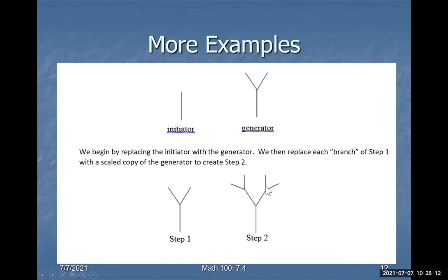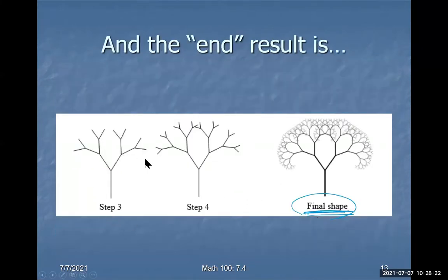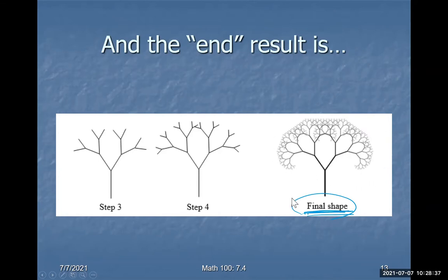We replace each branch of step one with a scaled copy of the generator — take each segment and add two branches to the end. Step three looks like this, step four looks like this, and after many steps you reach what's called the final shape. You can't actually get to the final step because this continues forever, but you end up with a nice-looking tree.